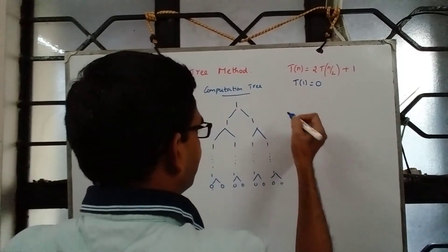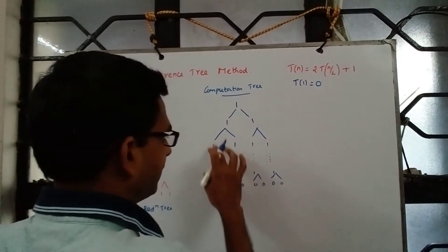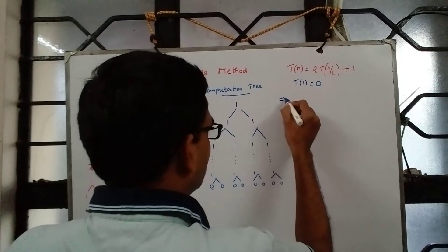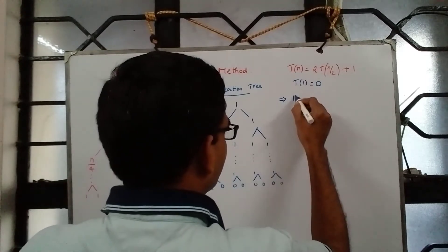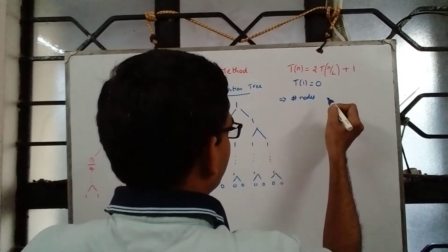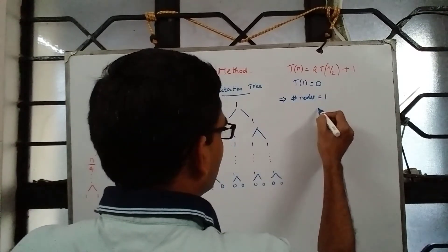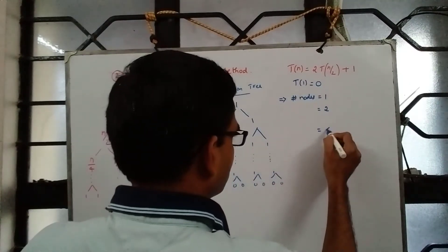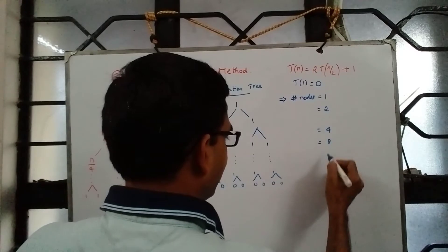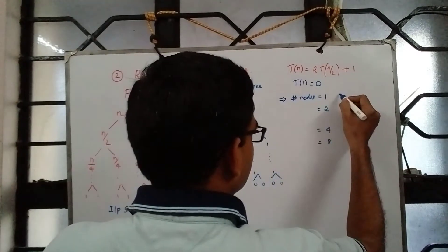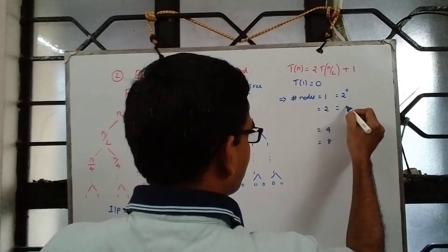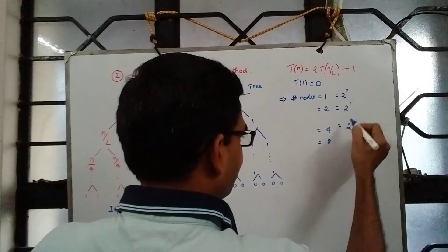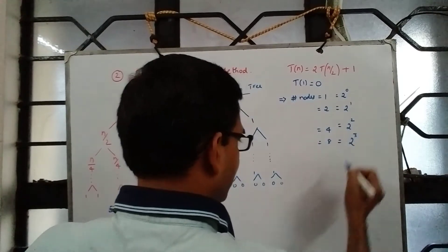The number of nodes at each level will precisely tell us the cost, since each node contributes 1 comparison. At the root level it is 1 node (2^0), at level 1 it is 2 nodes, at level 2 it is 4 nodes, at the next level it is 8. In other words, the number of nodes at level k is 2^k.